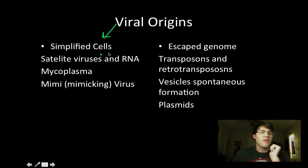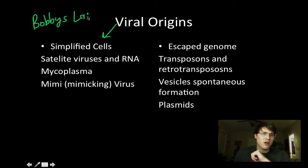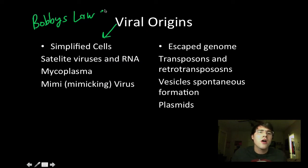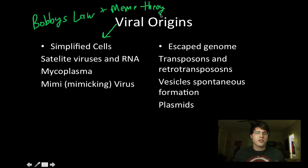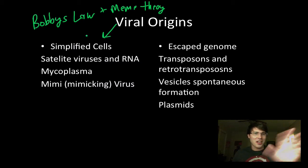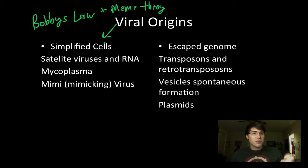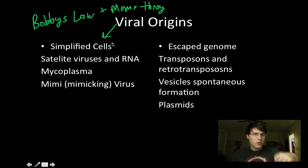One of them is the simplified cells hypothesis. Bobby's Law states that evolution strides towards energy efficiency. Combined with Richard Dawkins' meme theory — the idea that we are in some context nothing more than DNA replicating itself, genes and ideas replicating themselves — the simplified cell hypothesis supports that if you take a cell and simplify it to the bare necessities for the most energy-efficient way of replicating a genome, that's what a virus is: just a protein coat with some DNA or RNA in it.